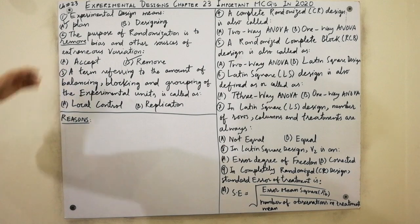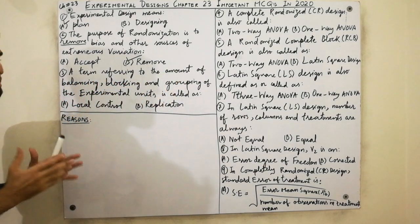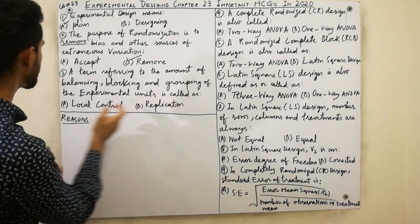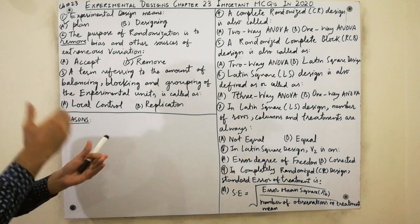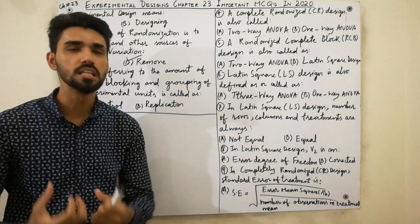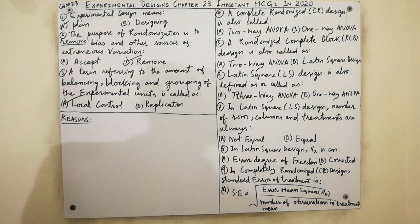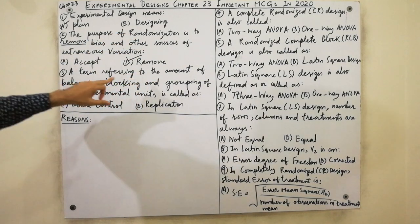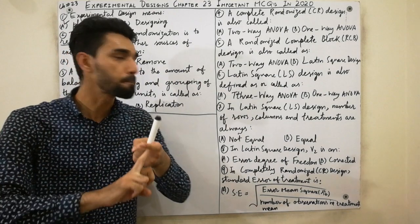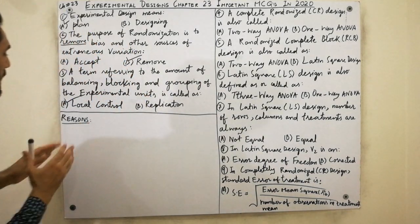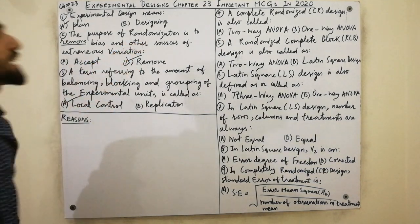The third MCQ is very easy. A term referring to the amount of balancing, blocking, and grouping in an experiment is called local control. We have balancing, blocking, and grouping, and we have control and ownership — so that is why it is called local control. Must remember: local control refers to the amount of balancing, blocking, and grouping of an experiment.